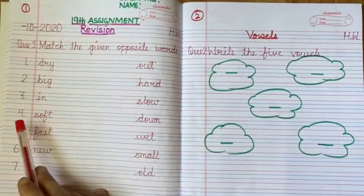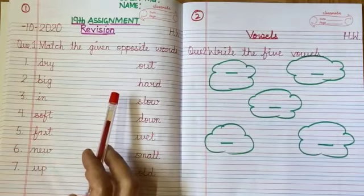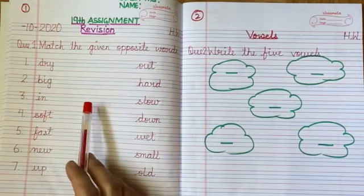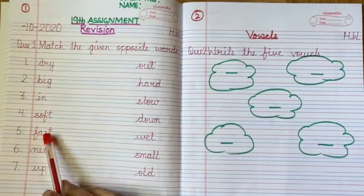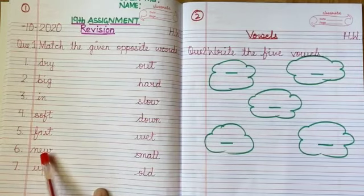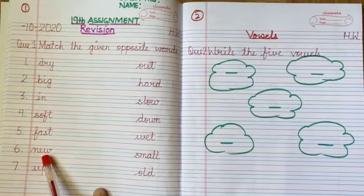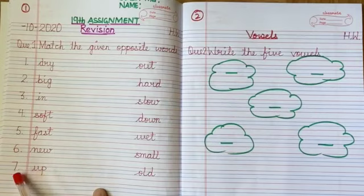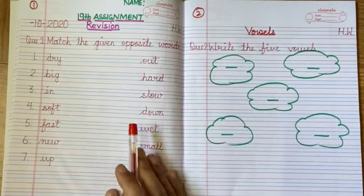Number four: S-O-F-T, soft. The opposite is hard. Number five: fast. The opposite is slow. Number six: N-E-W, new. The opposite is old. Match new with old. Then U-P, up. The opposite is down. Do the matching.